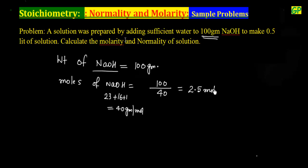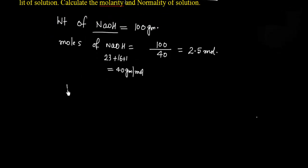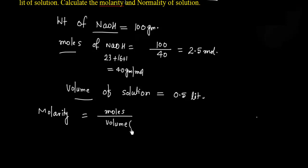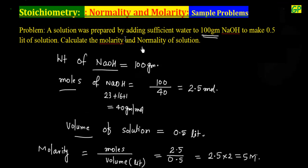The volume of solution is 0.5 liters. Molarity is moles divided by volume in liters. So molarity = 2.5 divided by 0.5, which is 2.5 × 2 = 5 molar. This is a highly concentrated 5M solution.